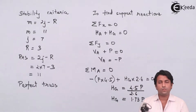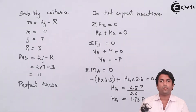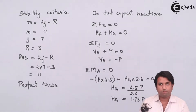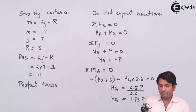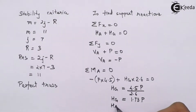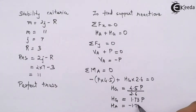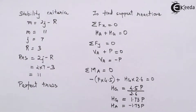I have got the reaction force at G — the horizontal reaction force — and that happens to be 1.73 times the applied force P. Similarly, I can write the value for HA and that will be a negative value. So I have calculated the support reactions. The next step is to draw the part of the truss which I will be considering for the further calculations.